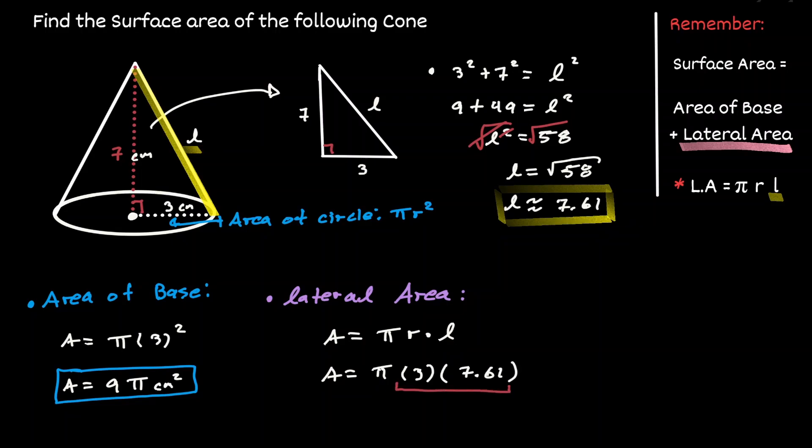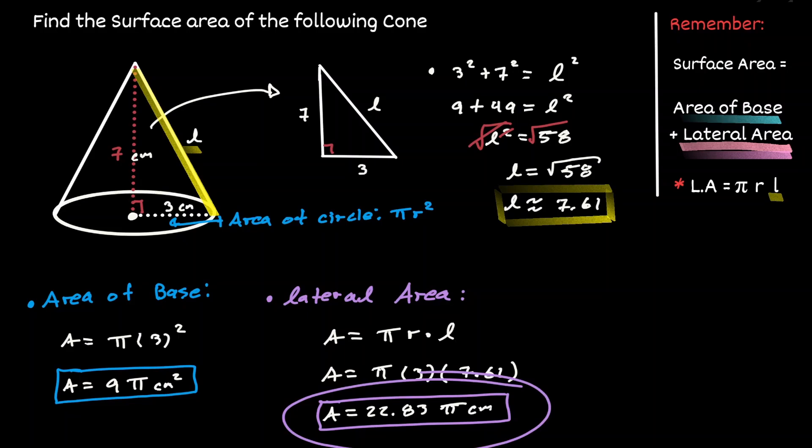Now it's a matter of just simplifying this result. 7.61 times 3 is equivalent to 22.83, and let's bring down the pi, centimeters squared. So now noting that the area of the base is equivalent to 9 pi, and the lateral area is equivalent to 22.83 pi.